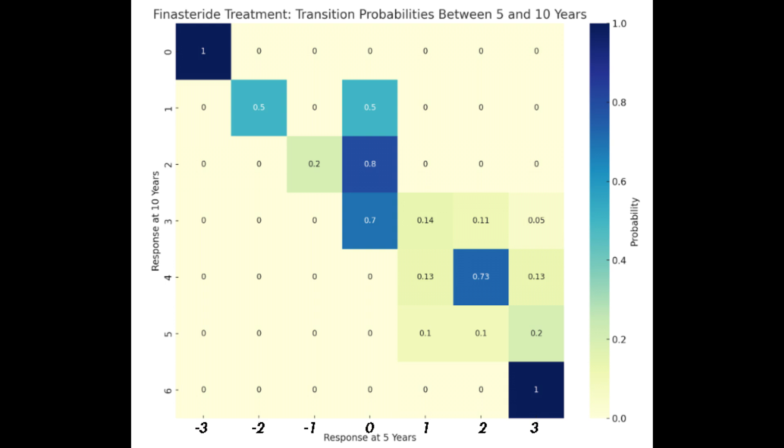The cells that fall along the diagonal line of the heat map are particularly noteworthy, as they indicate the probability of a patient's condition remaining consistent over time. For example, a cell intersecting the point where both the 5th year and 10-year responses are marked as 1 exhibits a probability of 0.73.